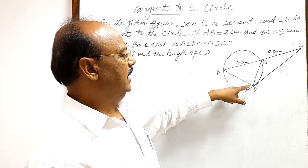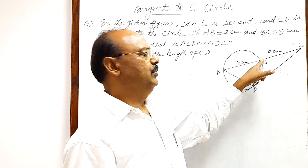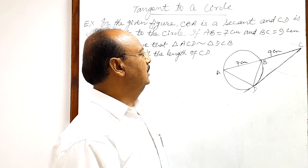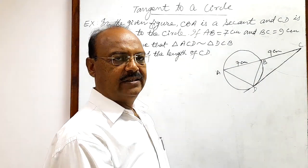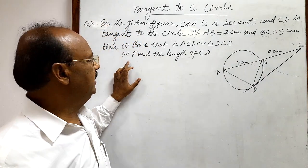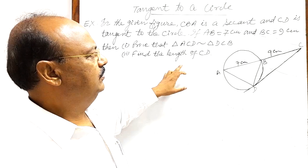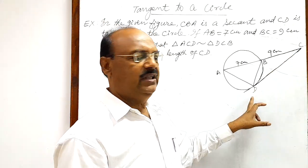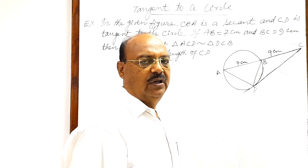So first of all we will show that these two triangles are similar, and secondly we have to find the length of CD, length of this tangent. So let us see the solution.